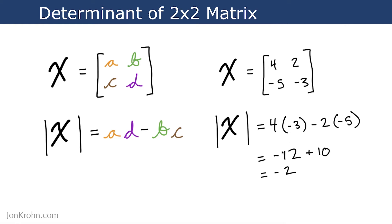Simplifying here a bit, 4 times negative 3 is negative 12, negative 2 times negative 5 is 10, and negative 12 plus 10 is negative 2. So our determinant of this matrix is negative 2.